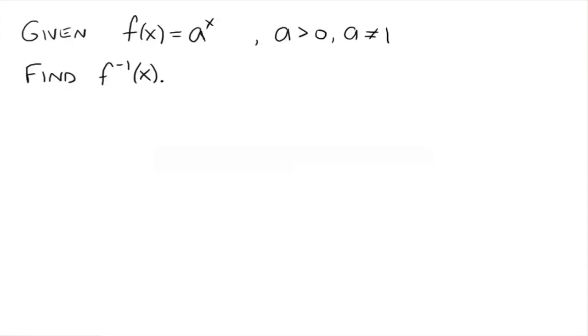Alright, so this is just a general discussion on logarithmic functions. So given f of x equals a to the x, just a normal exponential function where a is greater than zero but a is not one, let's find the inverse.